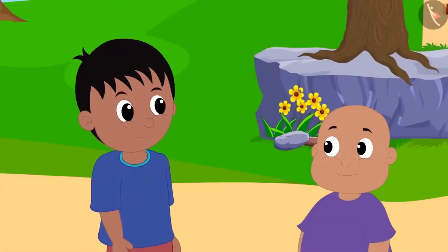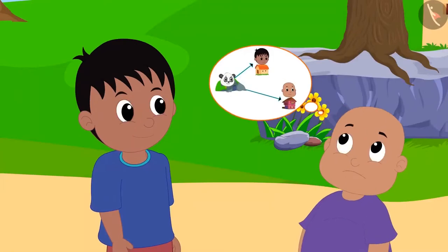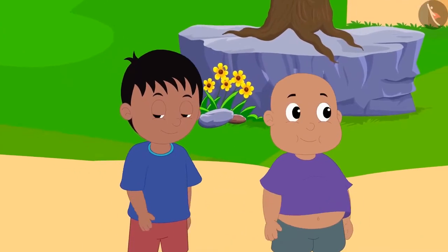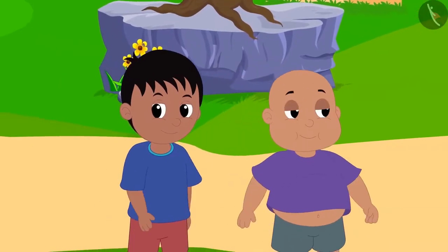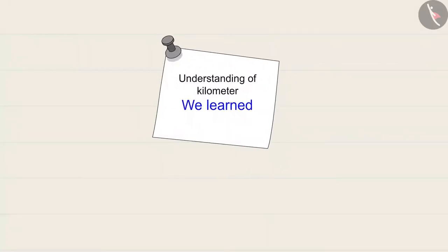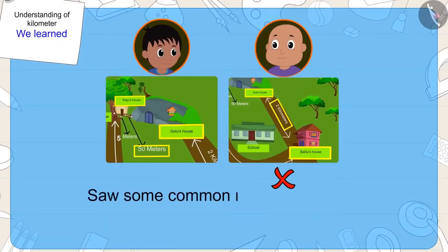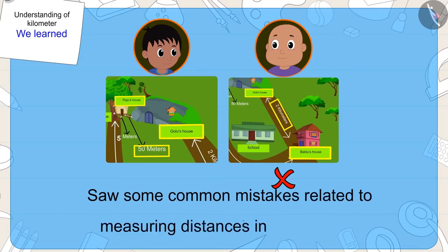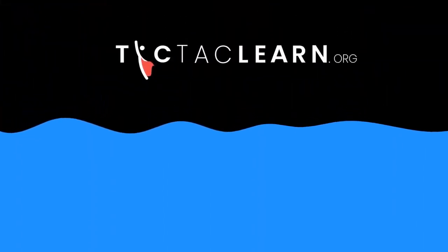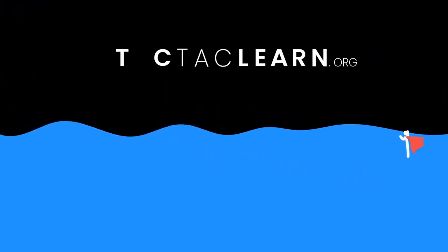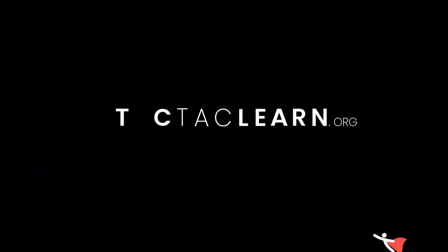Bablu finally understood Raju, and both of them went to play at Chanda's house. Kids, in this video we saw some common mistakes related to measuring distances in kilometers.